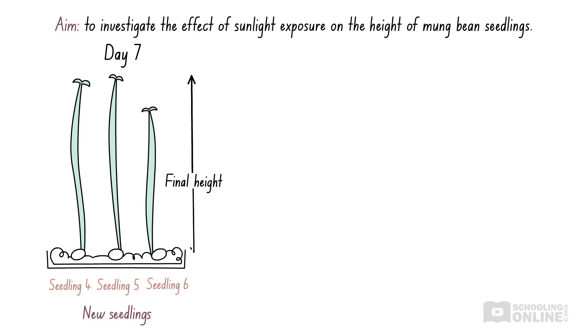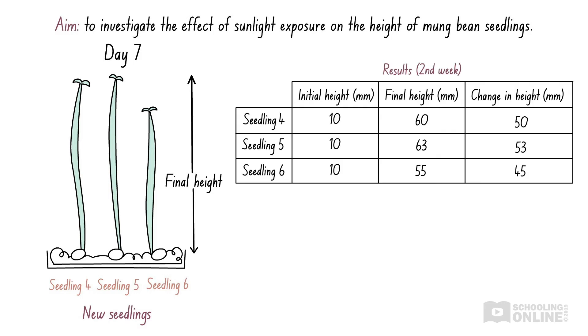So, you pick three new mung bean seedlings and grow them in sunlight for seven days. Then, you obtain the following measurements. As we can see, the differences between these measurements are large, from three millimetres to eight millimetres.